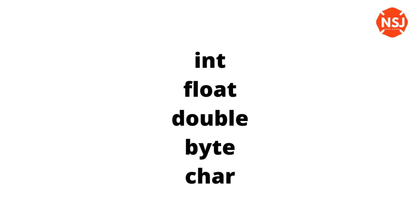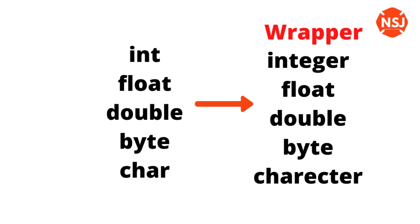If you just use a primitive like int, it is not object-based. This is the case in C/C++. In Java, if you want to use an int as an object, you need a wrapper class. The wrapper class allows you to find Integer, Float, Double, and Character as object types.